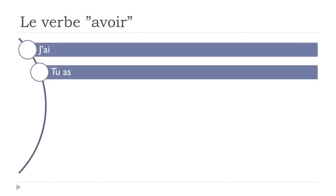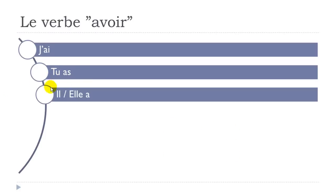Then comes il — the masculine form, meaning 'he' — and elle, meaning 'she.' Both take the form il a and elle a. As you can notice, the form for 'tu' ends in -as and both 'il' and 'elle' take -a: same pronunciation in both cases.